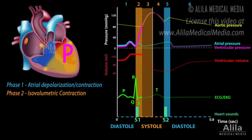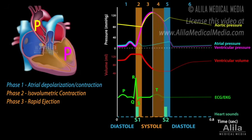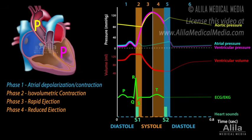Ventricular ejection starts when ventricular pressures exceed the pressures within the aorta and pulmonary artery. The aortic and pulmonic valves open and blood is ejected out of the ventricles. This is the rapid ejection phase. As ventricular repolarization, reflected by the T-wave, begins, ventricular pressure starts to fall and the force of ejection is reduced.